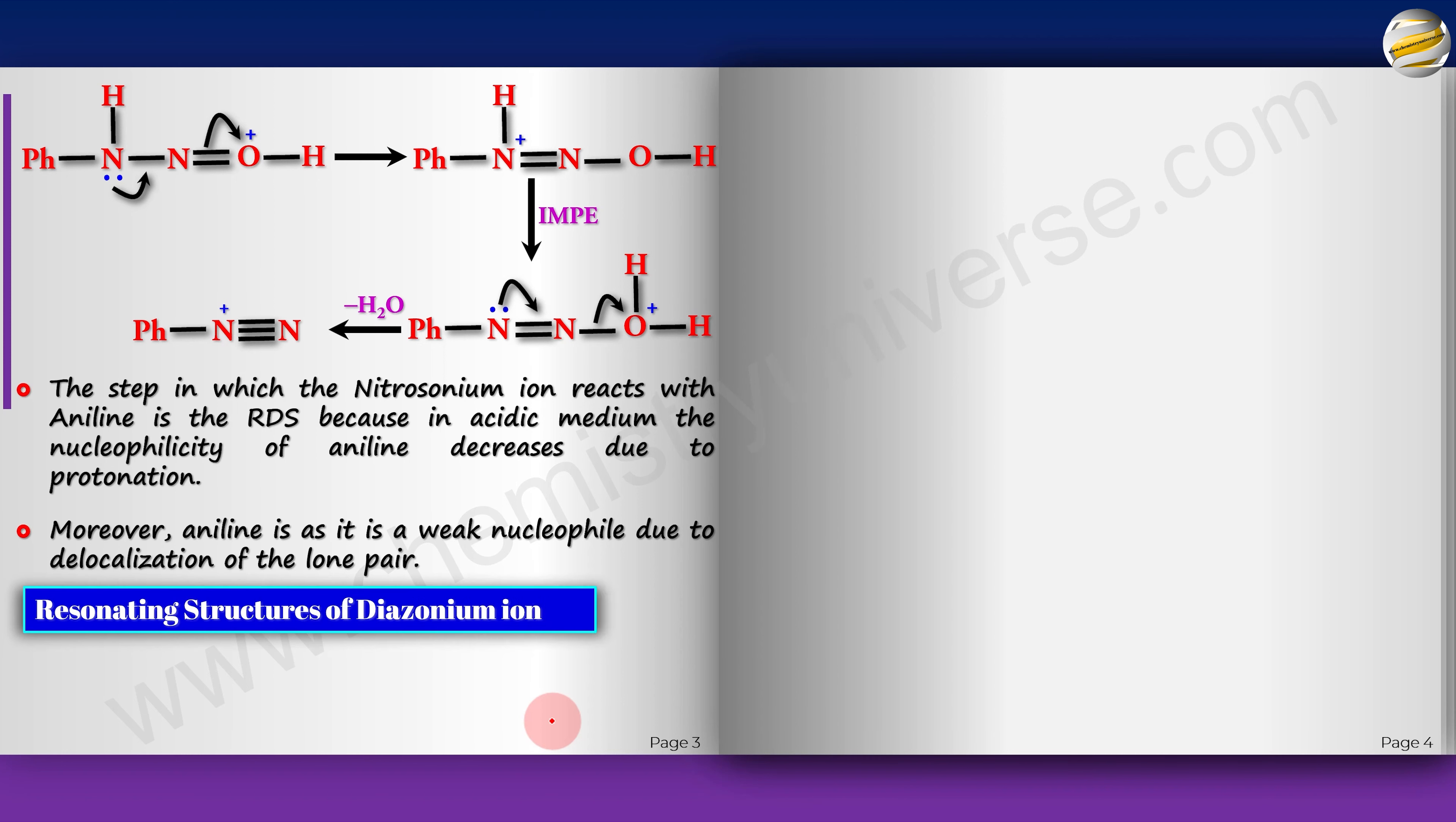Resonating structures of diazonium ion. We already saw that the pi bond can go to the middle N, and you will get the electrophilic end at the end. So these are the two resonating structures.